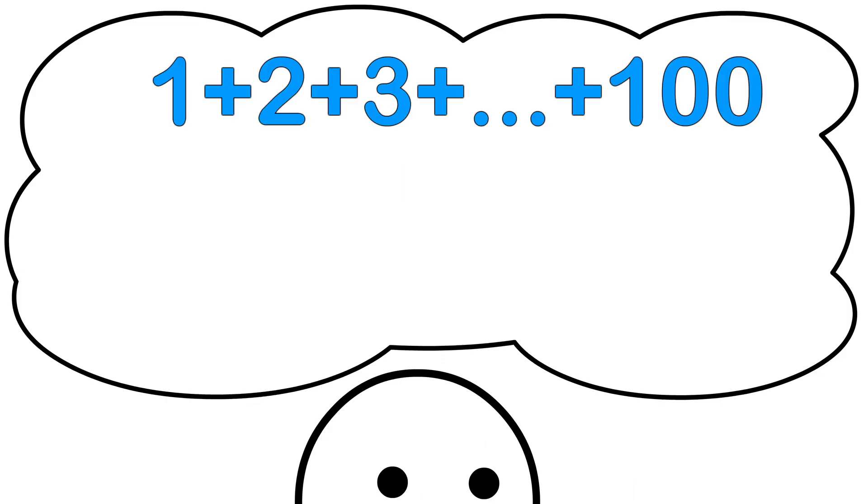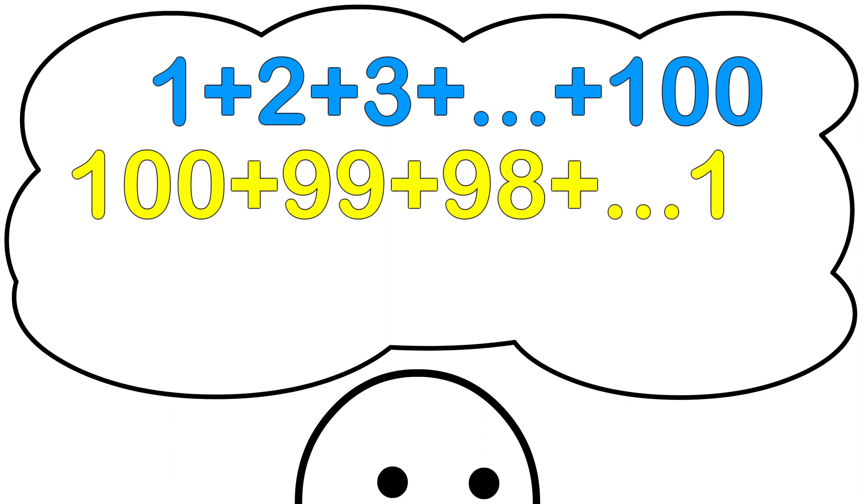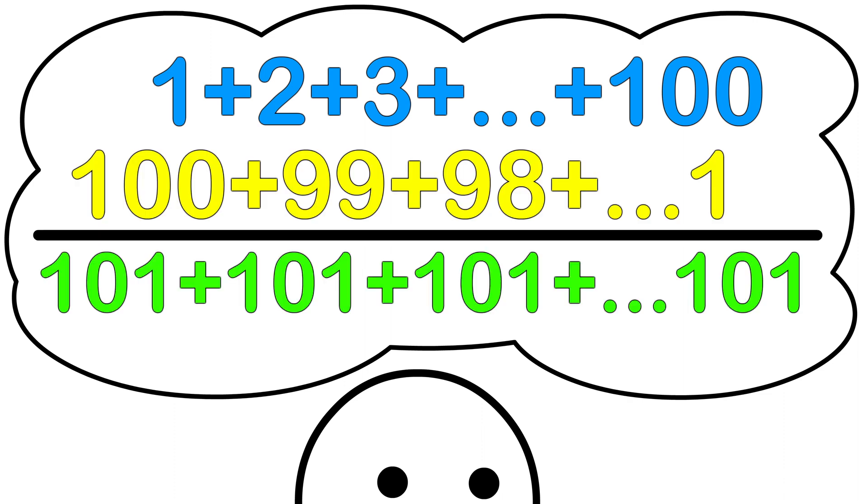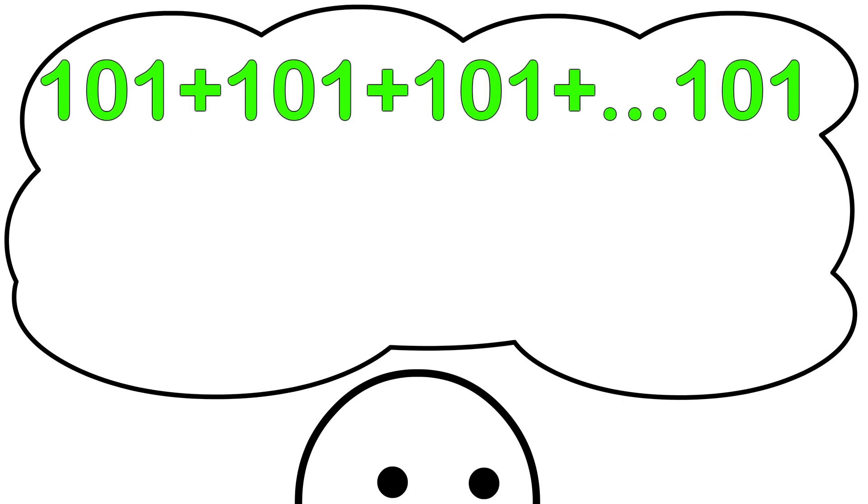He took the series of numbers from 1 to 100 and added another series in reverse. This is just 101 repeated a hundred times. Multiply and divide by 2 and the sum is 5050.